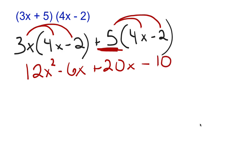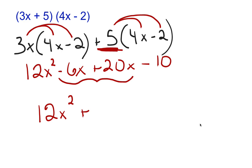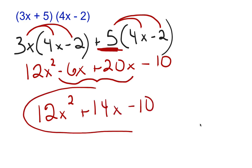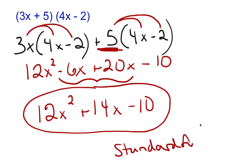We combine like terms: the minus 6x and the plus 20x. We end up with 12x squared plus 14x minus 10 for our simplified answer. Remember to make sure your answer is also in standard form when solving.